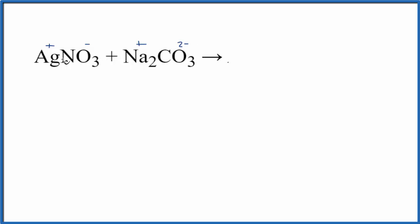This will be a double displacement reaction. The silver and the sodium, the positive ions, they'll replace each other. So we'll have silver carbonate, AgCO3, but since the CO3 is two minus, silver is one plus, we need Ag2CO3. So there's our silver carbonate.